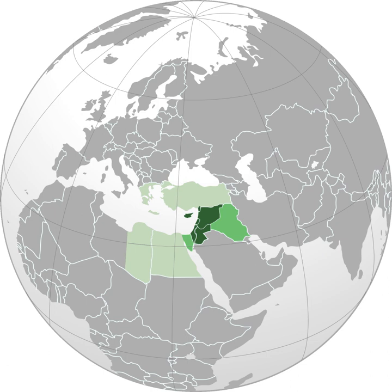In the 13th and 14th centuries, the term Levante was used for Italian maritime commerce in the eastern Mediterranean, including Greece, Anatolia, Syria-Palestine, and Egypt — that is, the lands east of Venice. Eventually the term was restricted to the Muslim countries of Syria-Palestine and Egypt. In 1581, England set up the Levant Company to monopolize commerce with the Ottoman Empire.